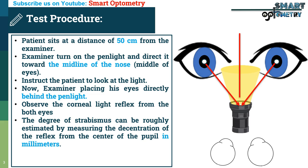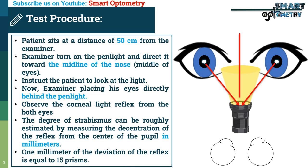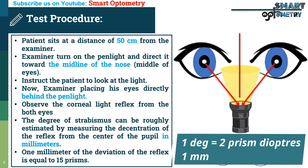The degree of strabismus can be roughly estimated by measuring the decentration of the reflex from the center of the pupil in millimeters. One millimeter of deviation of the reflex is equal to 15 prism diopters. Remember: one degree is equal to two prism diopters, and one millimeter is equal to seven degrees or 14 prism diopters.